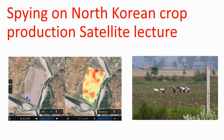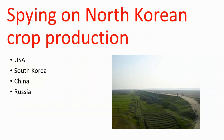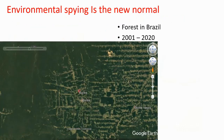Today's video is about spying on North Koreans' agricultural production. It's also a satellite tutorial, so everybody can do this themselves. Before we begin, I would like to thank all my subscribers. Who is spying on North Koreans' crop production? The United States and South Korea, because they want to know what the actual agricultural production will be in the coming year. Environmental spying is kind of a new normal.